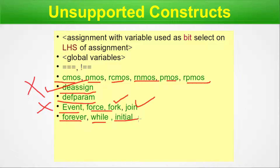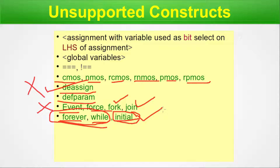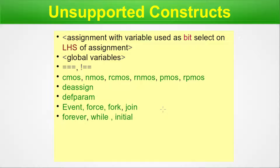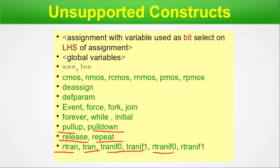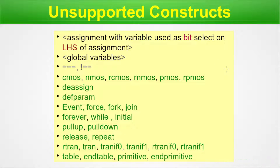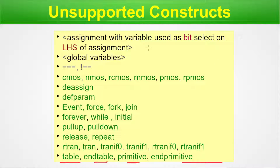Also unsupported: forever and while loops — these are infinite loops and cannot exist in a real system. The initial block is also unsupported because in an actual chip, initial conditions are determined during the power-up sequence, not by an initial block. Additionally, pullup and pulldown, release, repeat, rtran, tran, tranif0, tranif1, rtranif0, rtranif1, table, endtable, primitive, and endprimitive are all unsupported constructs.